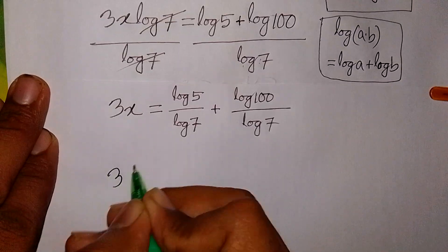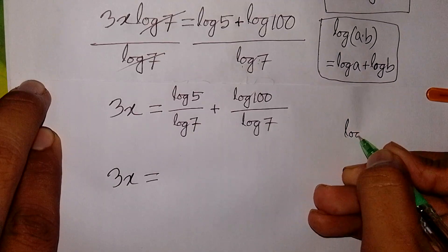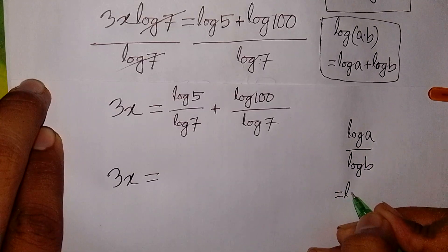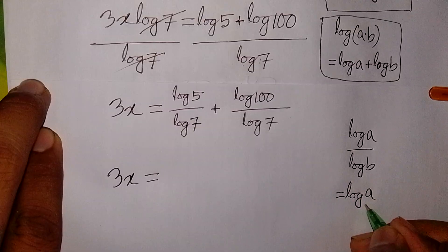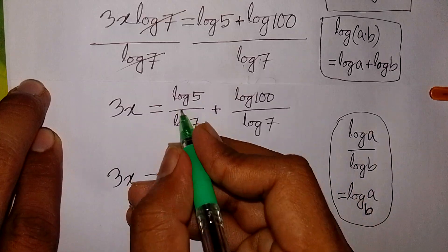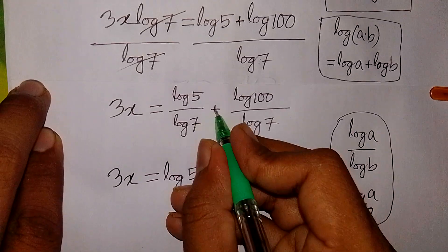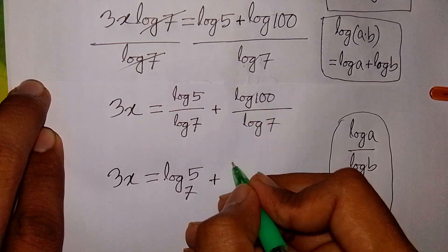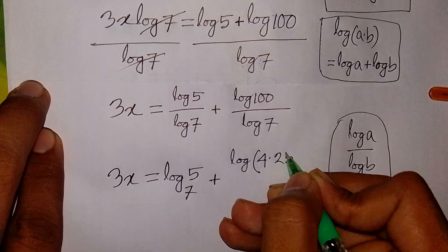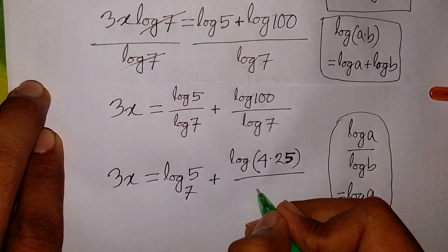We have 3x equal to log 5 over log 7. We apply the formula log a over log b equals log a base b, so it becomes log 5 base 7. Plus log 100, which can be written as log of 4 times 25, so it becomes log(4 times 25) over log 7.